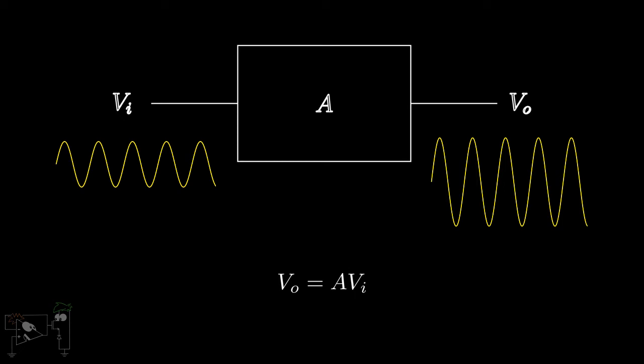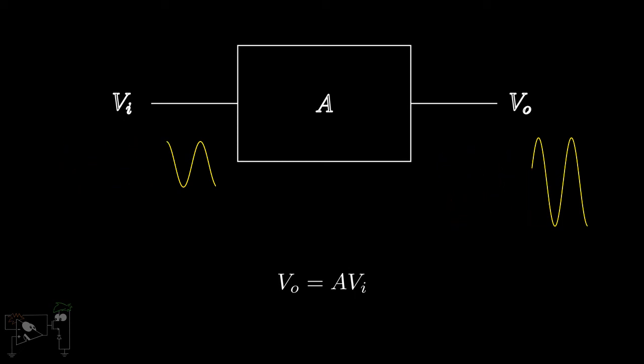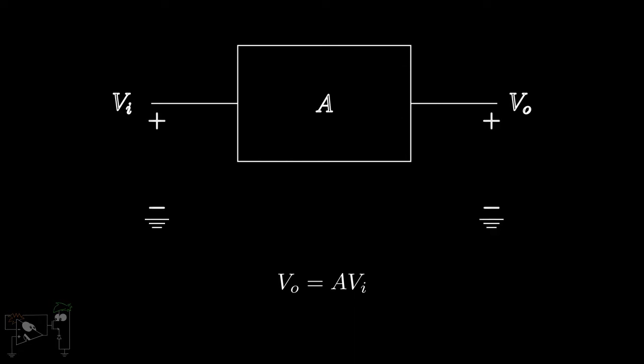One thing I want you to remember is that none of these are stand-alone signals. They are measured with respect to some common reference node, or ground as we call it. So the input VI to the amplifier is actually the difference between the input node and the ground node.